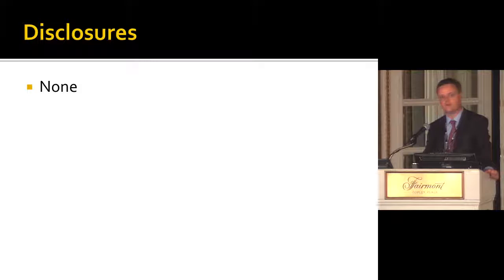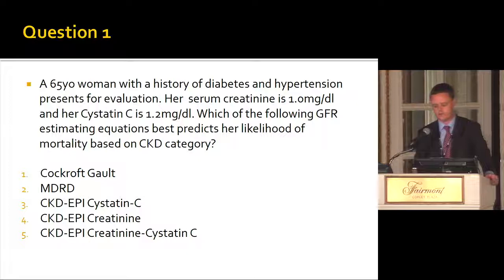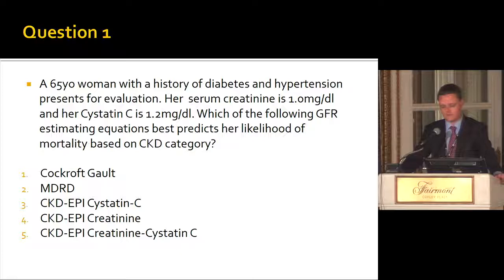I'd like to start with a question. A 65-year-old woman with a history of diabetes and hypertension presents for evaluation. Her serum creatinine is 1 and her serum cystatin C is 1.2. Which GFR estimating equation best predicts her likelihood of mortality based on CKD category? Cockroft-Gault, MDRD, CKD-EPI cystatin C, CKD-EPI creatinine, or CKD-EPI creatinine-cystatin C?